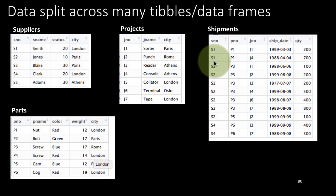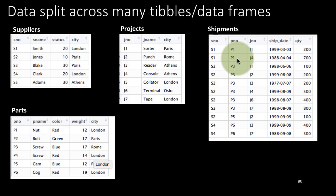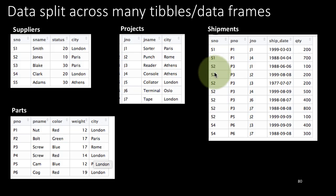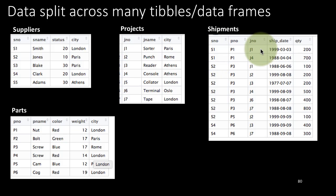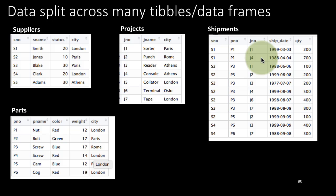For example, the second row tells us that supplier S1 supplied part P1 to project J4 on a specific date and 700 units were shipped. A shipment is talking about the combination of supplier, part, and project. Supplier 1 made the first shipment to project 1 and the second shipment to project 4. Similarly, part 1 was shipped to project 1 as well as project 4, and part 3 was shipped to quite a few projects.